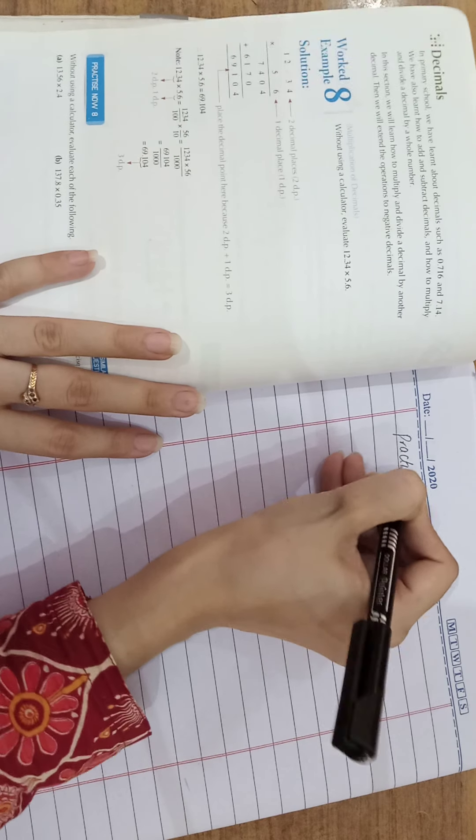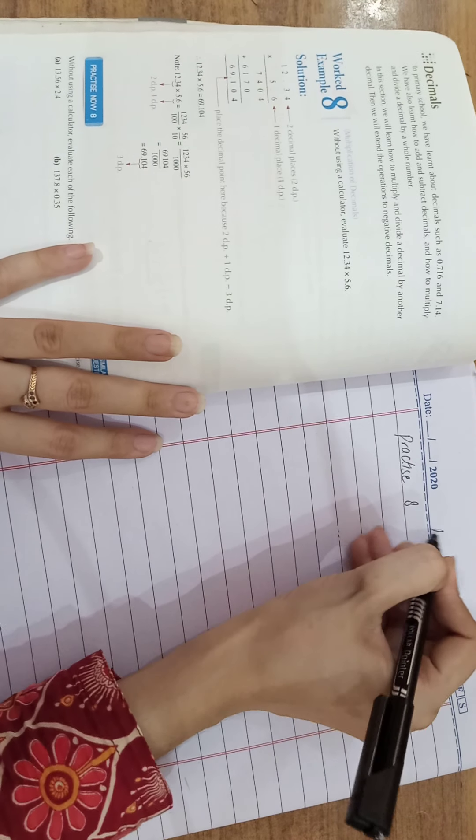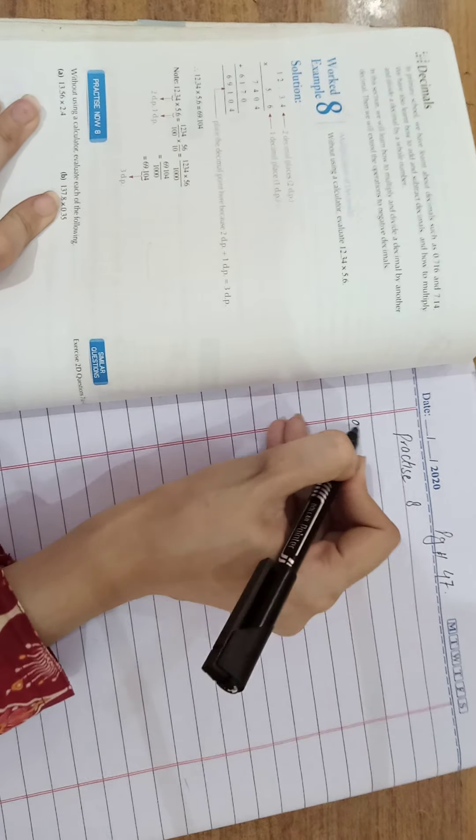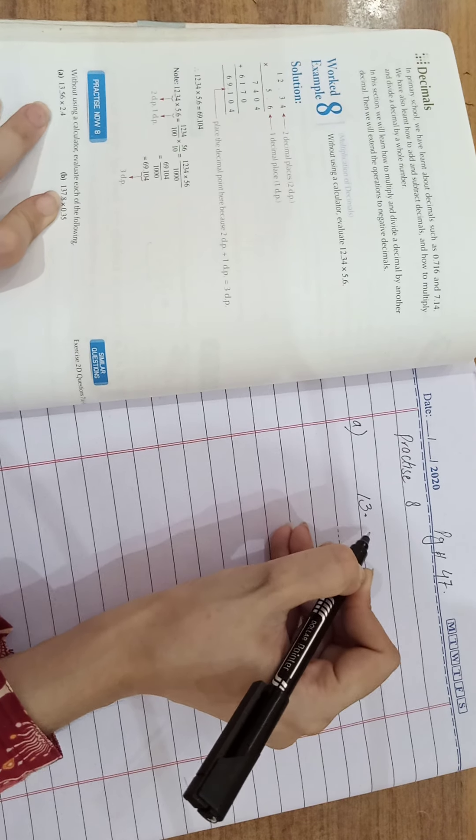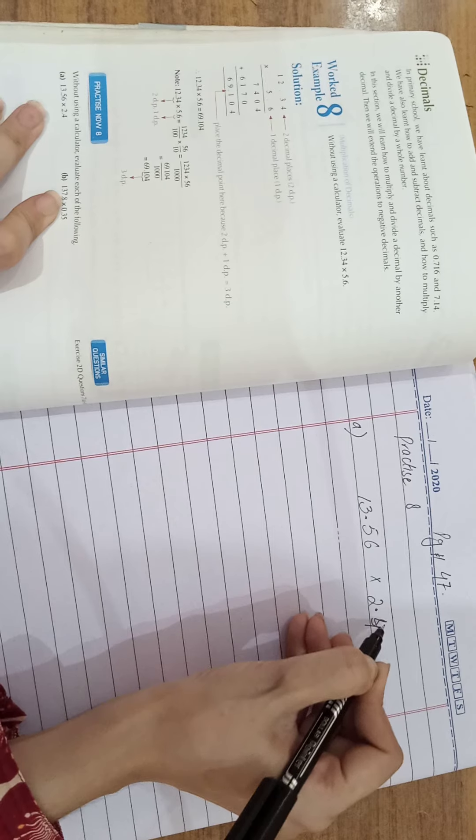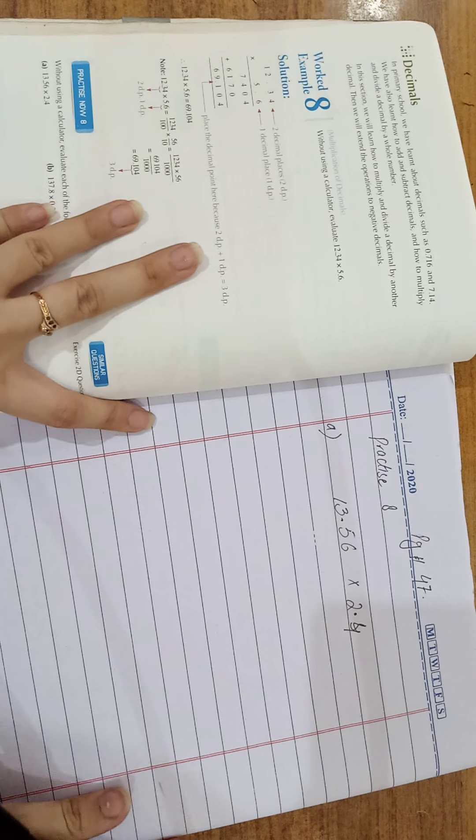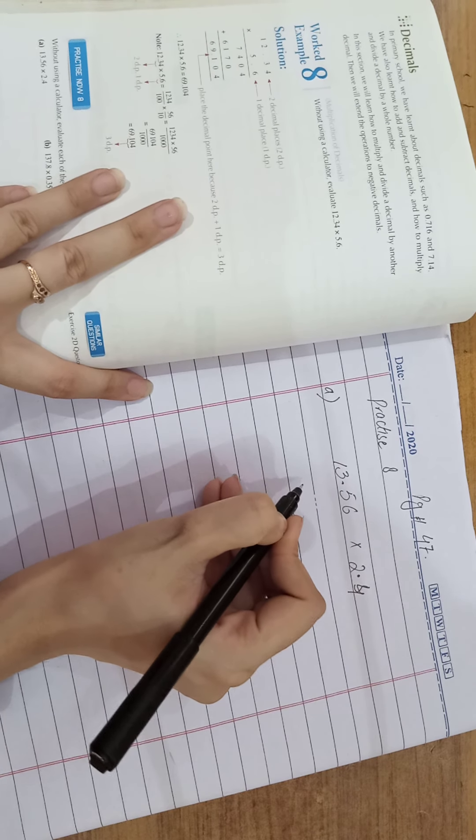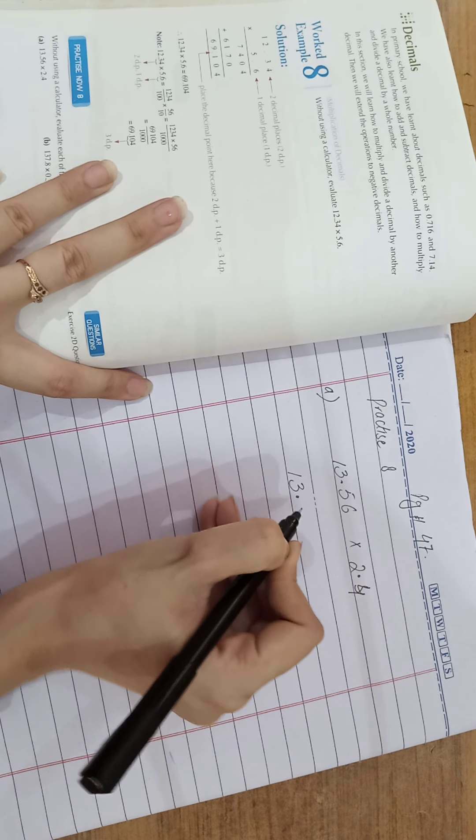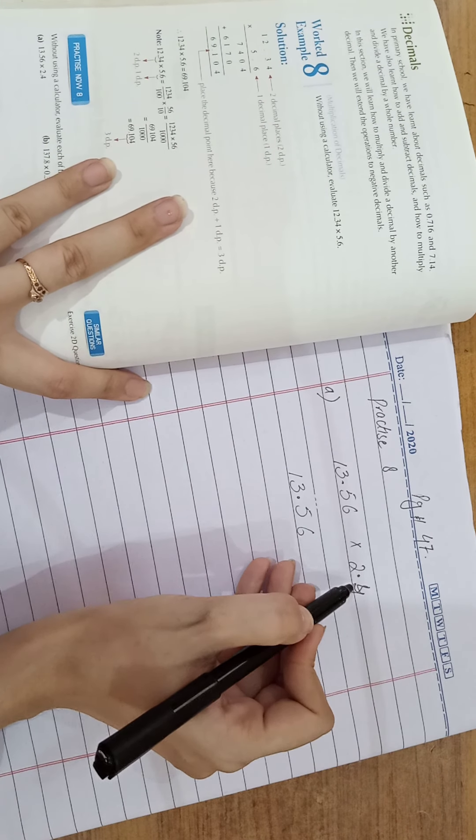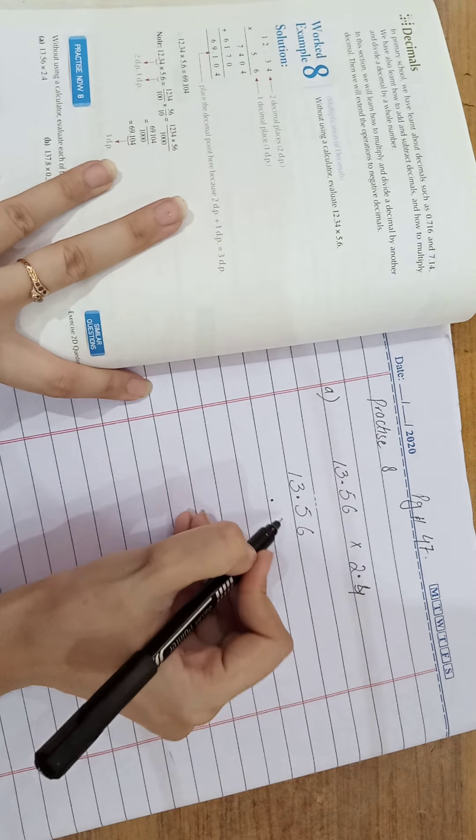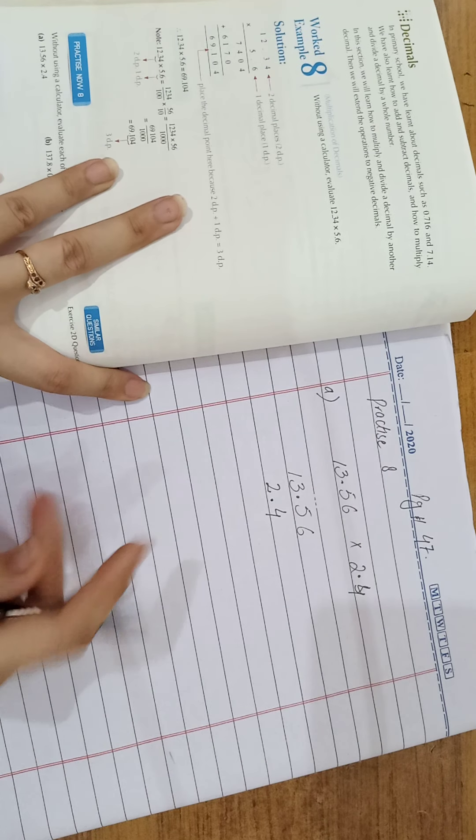First of all, page number 47. Value is 13.56 multiply by 2.4. Write in vertical form. You know that this is in horizontal and we will write this value in vertical form. 13.56, 2.4. Point should be inside, the point 4 and 2.